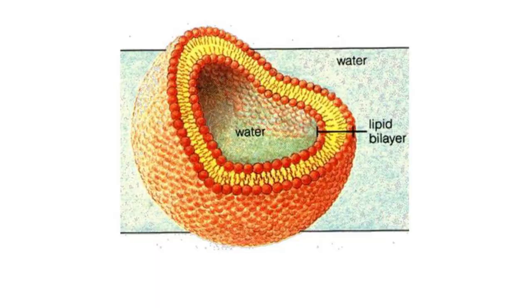And if we view it three-dimensionally, this phospholipid bilayer would form a spherical perimeter, giving us the cell membrane we see here.